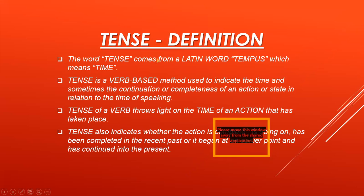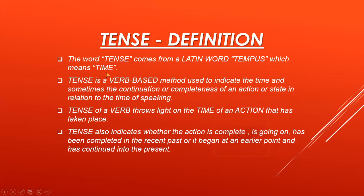First of all, I'm giving you the definition of tense. The word tense comes from a Latin word. Latin is a language, like English, like Urdu, like French. The Latin word is 'tempus', which means time. Tense is a verb-based method used to indicate the time. When we use different tenses, we use different forms of verbs, and because of that it is called a verb-based method used to indicate the time and sometimes the continuation or completeness of an action or state in relation to the time of speaking.